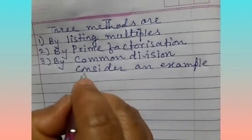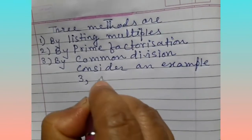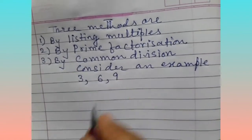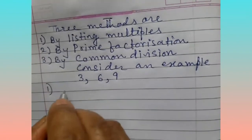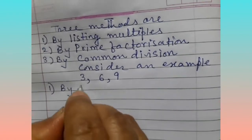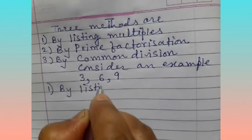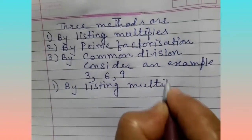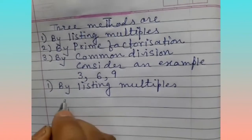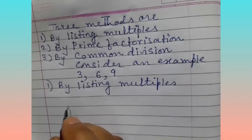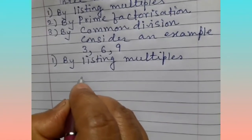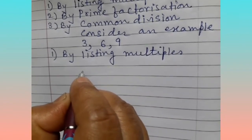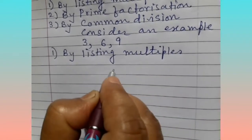Our example numbers are 3, 6, and 9. First method: by listing multiples. For this method, we have to learn the tables 2 to 20.